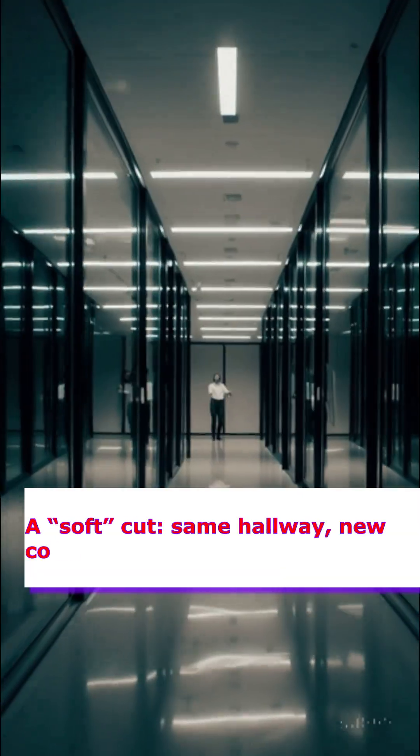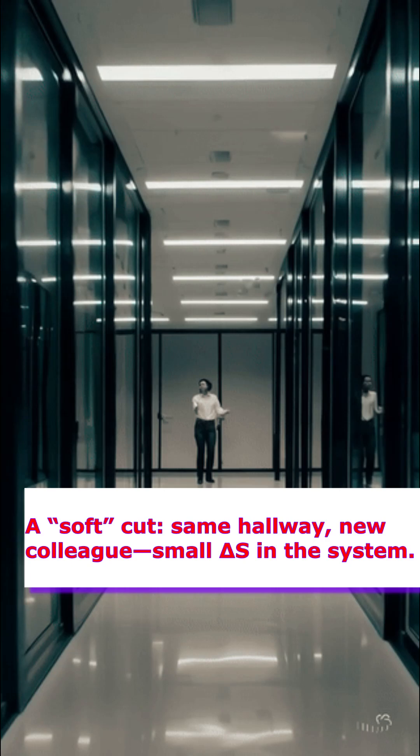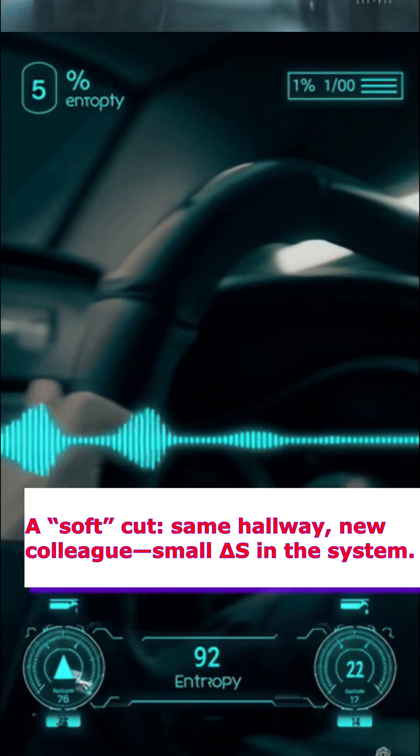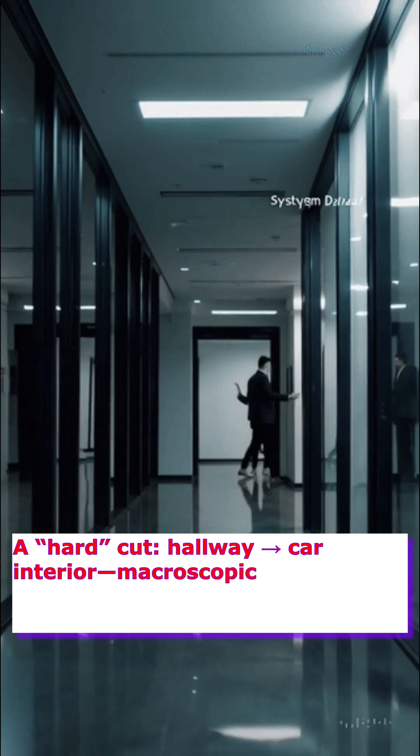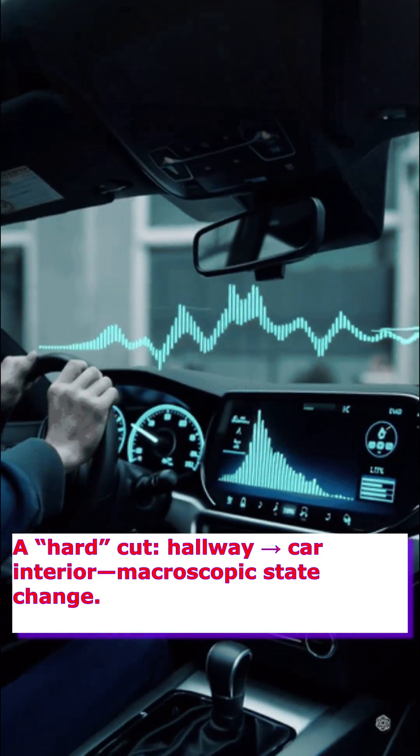A soft cut: same hallway, new colleague, small delta S in the system. A hard cut: hallway, car interior, macroscopic state change.